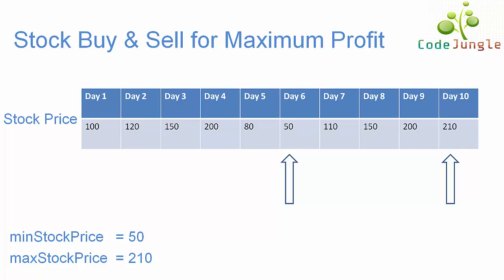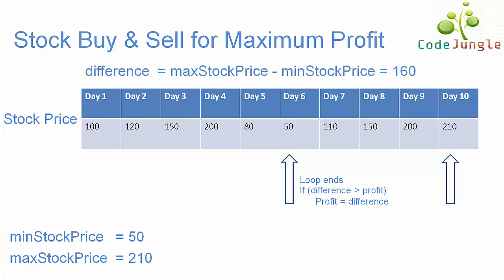Finally, once we reach the end of the loop, we calculate the difference amount: maximum stock price minus minimum stock price, which is 210 minus 50, giving 160. We check whether this difference is greater than profit — our profit is 100 and difference is 160, so the condition is true. Therefore profit becomes 160, buying value becomes 50 and selling value becomes 210. Since buying value is 50, buying day is day 6; since selling value is 210, selling day is day 10, and the maximum profit is 160.